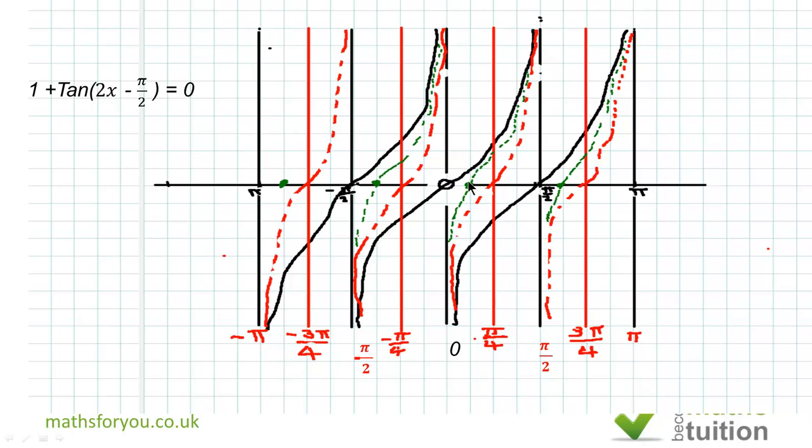The question now is, how did I get where the graph crosses the x-axis? If we say that f(x) = 0, that's 1 + tan(2x - π/2) = 0. If we add -1 to both sides, we end up that tan(2x - π/2) equals -1.